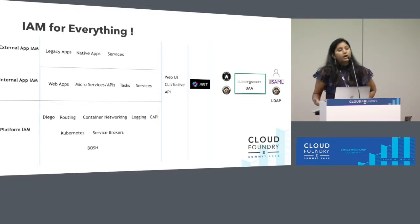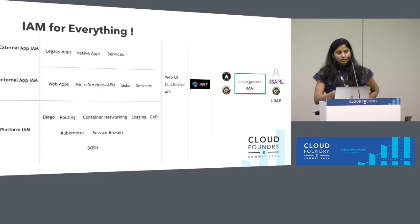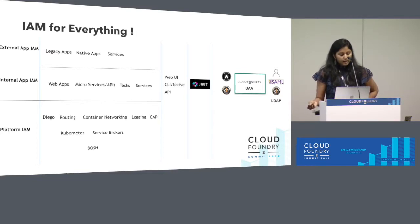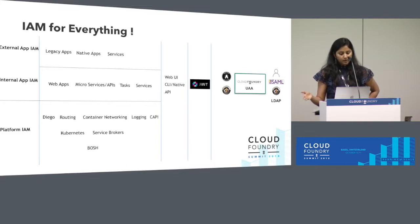These standards are SAML, LDAP, and OpenID Connect. UAA is able to use those standards and federate an identity to different components of the platform and for applications. On the platform front, we now have two kinds of platform: the Cloud Foundry application runtime and Kubernetes. UAA is able to secure them with the tokens that it generates. There are also other aspects of the platform like routing, container networking, and BOSH itself, and UAA has a role to play there too.